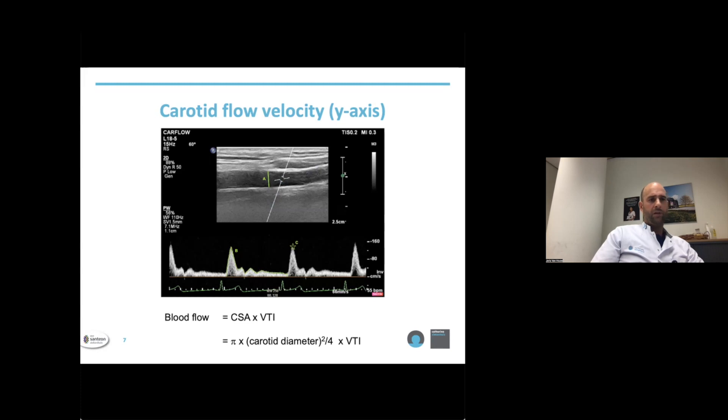However, blood flow velocities are dependent on adequate doppler insonation angles and are therefore prone to measurement inaccuracies. Also, manual measurement of the carotid artery diameter is error-prone, as the diameter changes from the systolic to diastolic phase, and there is also the risk of oblique transsection of the vessel.